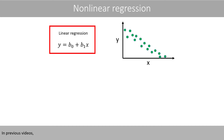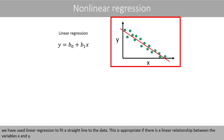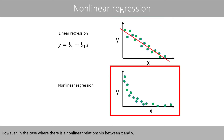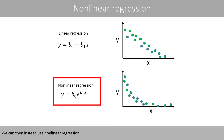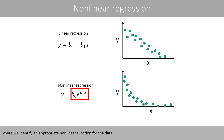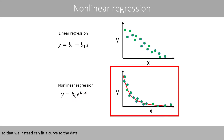In previous videos, we have used linear regression to fit a straight line to the data. This is appropriate if there is a linear relationship between the variables x and y. However, in the case where there is a nonlinear relationship between x and y, a straight line will not be appropriate to fit to the data. We can then instead use nonlinear regression, where we identify an appropriate nonlinear function for the data, so that we can fit the curve to the data.